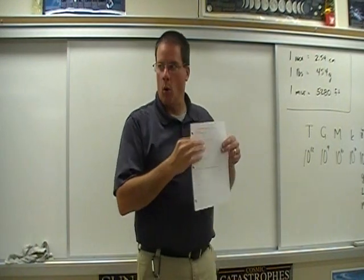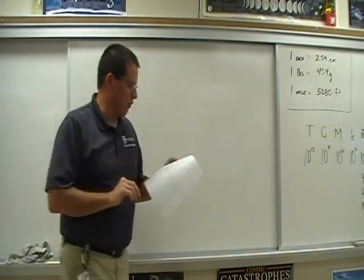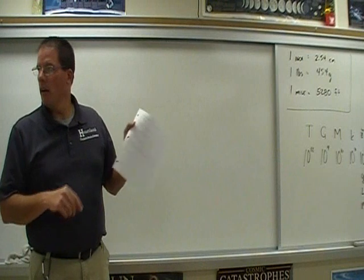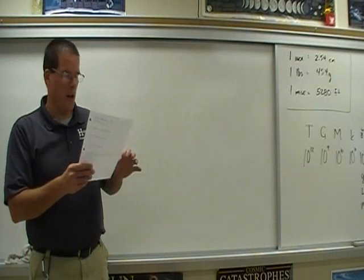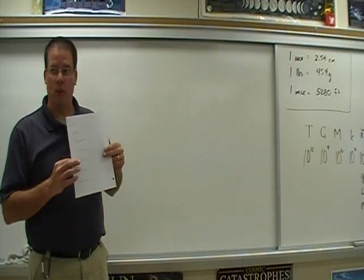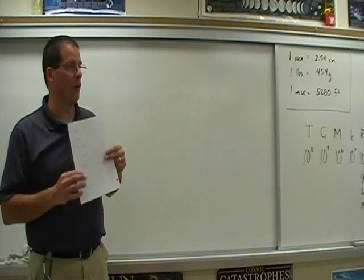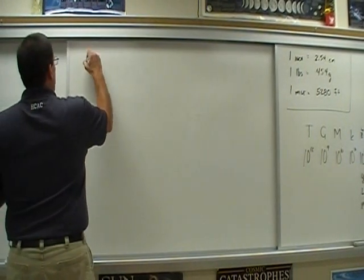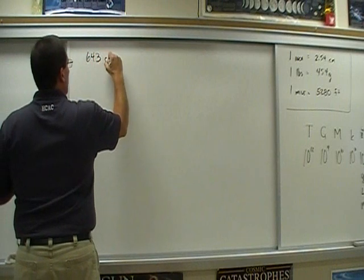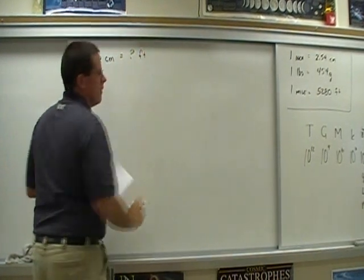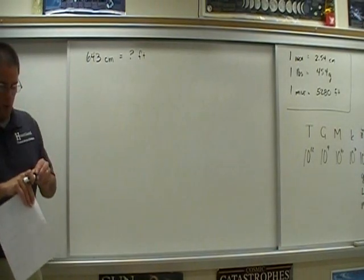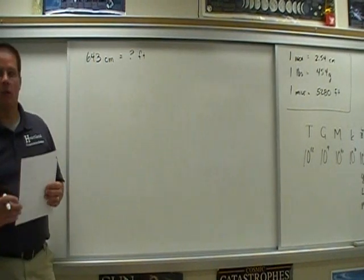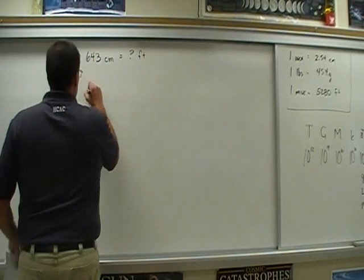Now we're looking at the practice problems. I want to work the first three out. We're not going to do number four or Roman numeral IV, so go ahead and circle that one right now. Circle IV on the practice problem. And on the back side, circle number 10 and number 11 — you're not going to do those as homework tonight. Number one on the practice problem: 643 centimeters, and it wants to know how many feet.